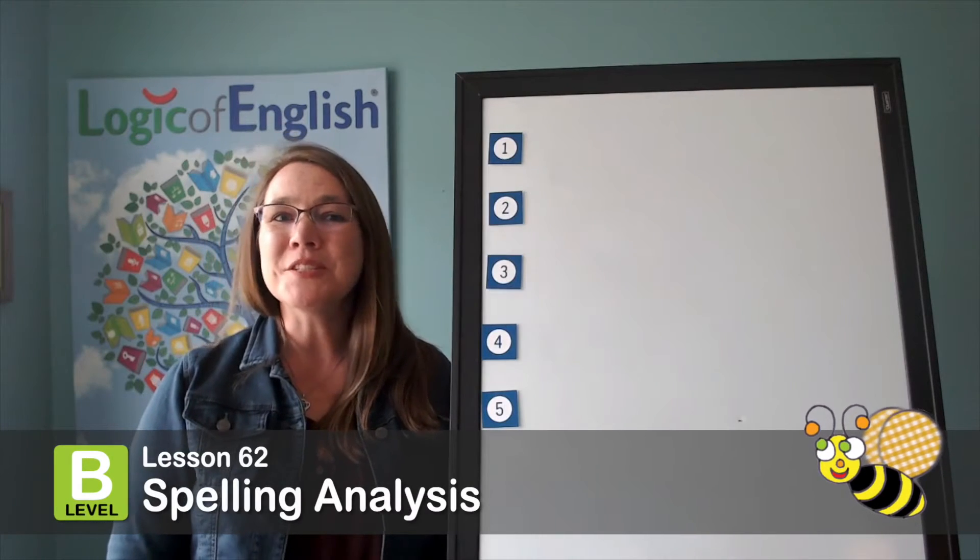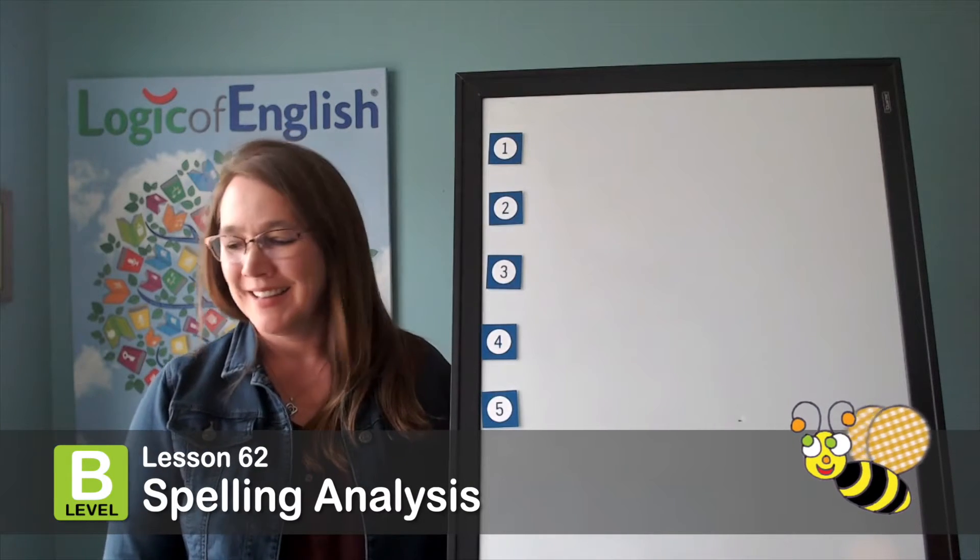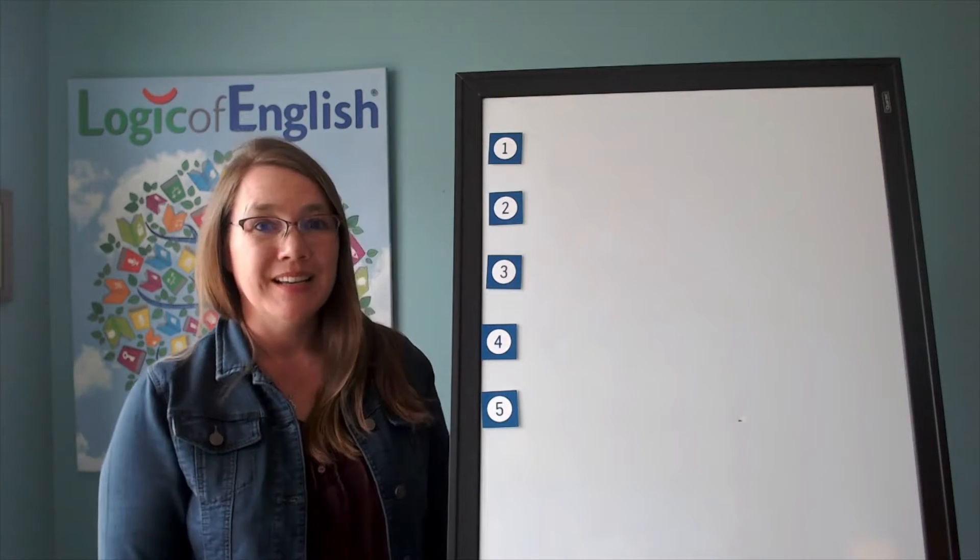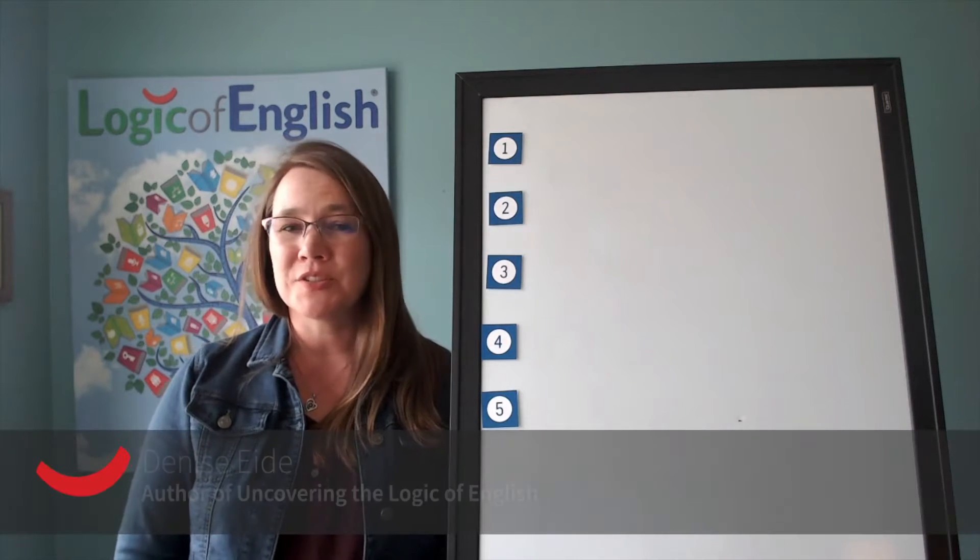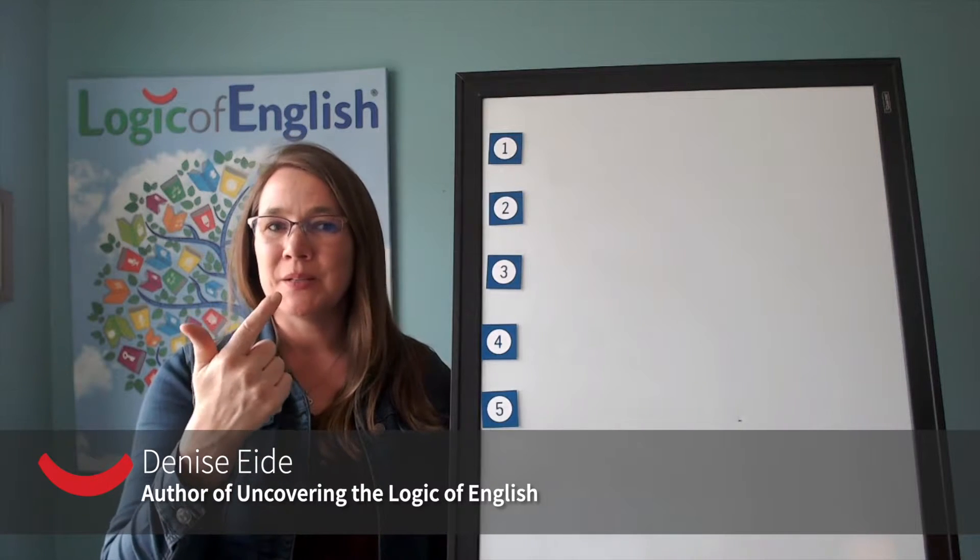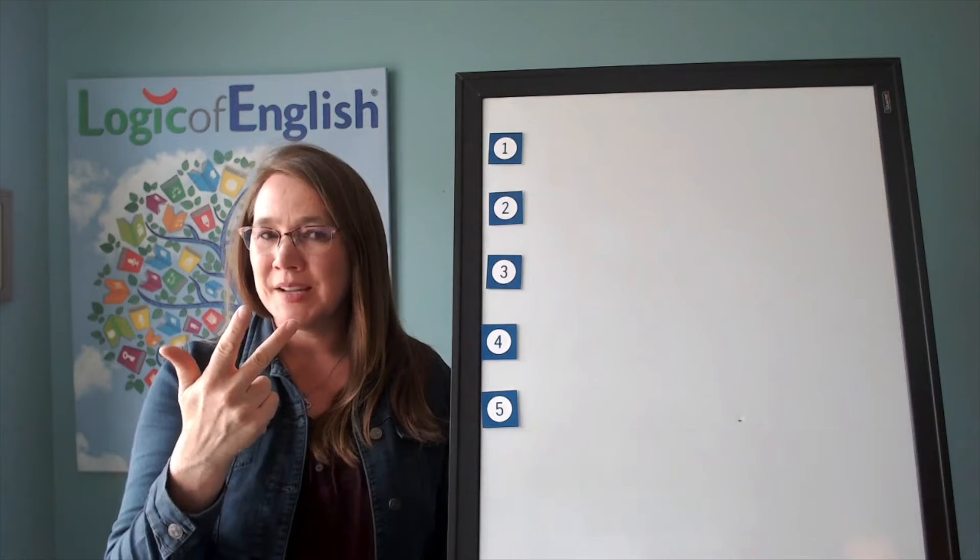It's time for spelling analysis. All right, our first word is blue. The team will wear blue jerseys. Blue. Let's sound it out together. Buh, ul, oo.